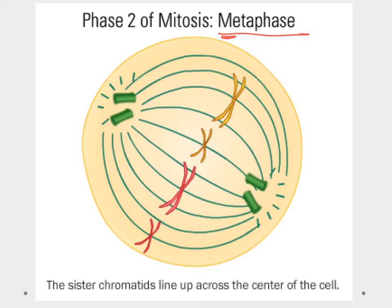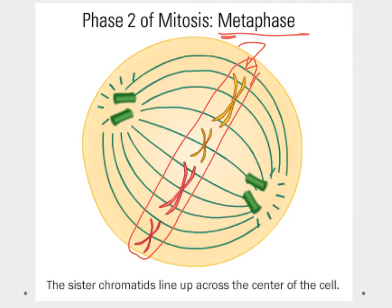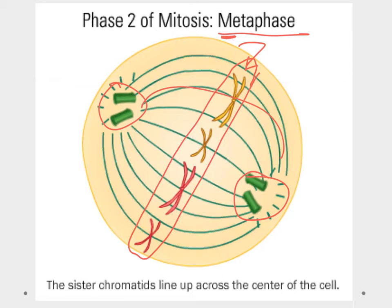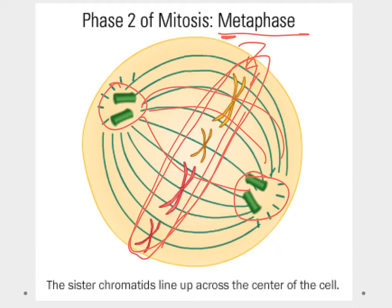During metaphase — M for middle — the chromosomes line up at the metaphase plate in the middle of the cell. This ensures that when the cell divides, each daughter cell gets all the pieces it needs. The centrioles have migrated to opposite poles and the spindle fibers have stretched across the cell, attaching to the chromosomes lined up in the center.